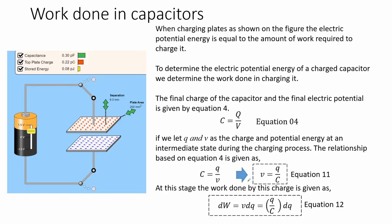When charging plates, the electric potential energy in a charged capacitor equals the amount of work required to charge it — that is, to separate opposite charges and place them on different conducting plates. When the capacitor is discharged, the stored energy is dispelled as work done by the electrical forces. To determine the electric potential energy of a charged capacitor, we determine the work done in charging it. The final charge and final electric potential of the capacitor are given by equation 4.